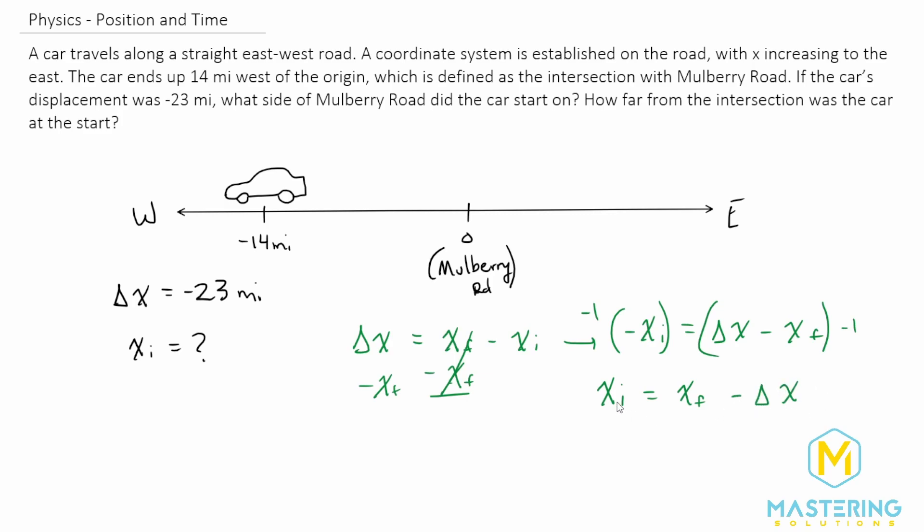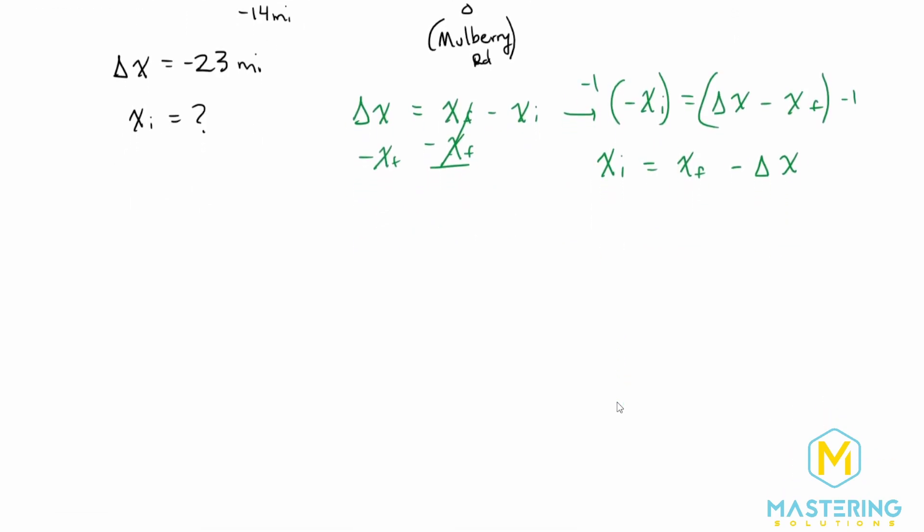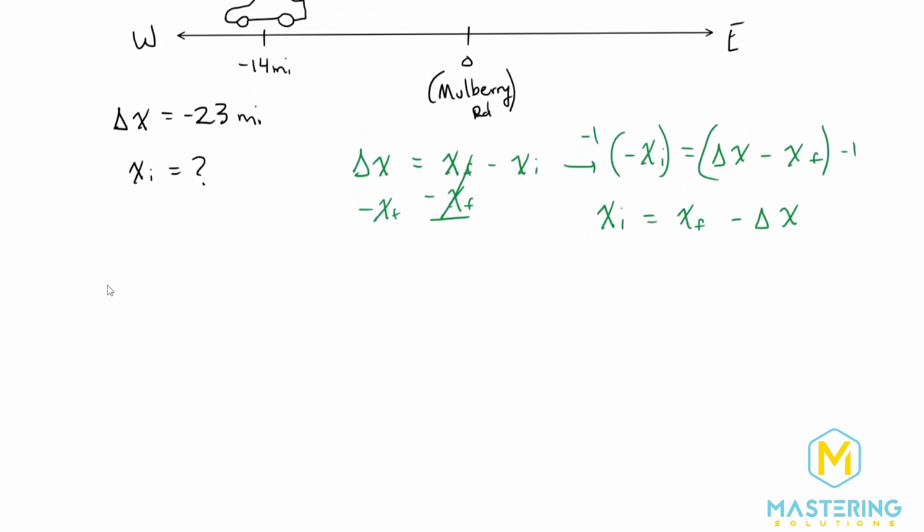Now when we plug in our values, we have x initial equals x final, which is negative 14 miles, minus the displacement, which is negative 23 miles.